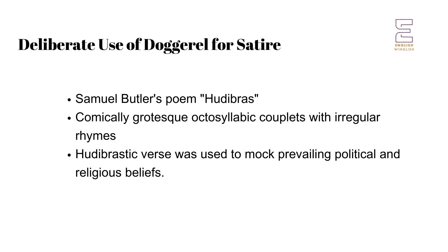One notable example of the deliberate use of Dogrel for satiric effect is Samuel Butler's poem Hudibras. Written in the 17th century, Hudibras is known for its comically grotesque octosyllabic couplets with irregular rhymes. Butler employed this form, known as Hudibrastic verse, to satirize the prevailing political and religious beliefs of his time. Through the use of broken and tumbled lines, Butler's poem effectively mocked the hypocrisy and absurdity of the characters he portrayed.